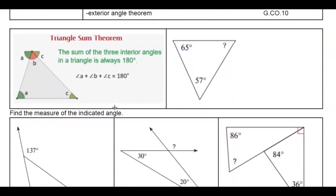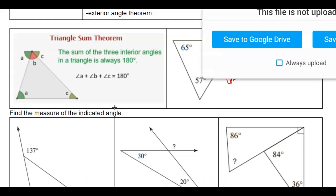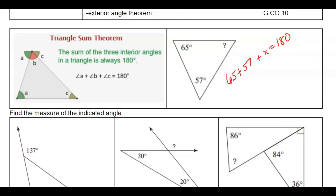The first theorem is the triangle sum theorem, which basically says that when you add up all three of the inside angles of a triangle, they always add up to 180 degrees. On the first example, we know that 65 plus 57 plus the third angle all have to add up to 180. So 180 minus 57 minus 65 gives us 58 degrees. The pictures will not always be drawn to size.